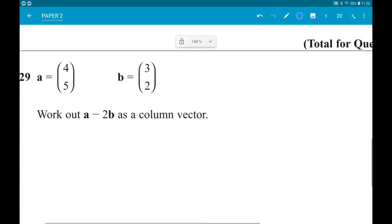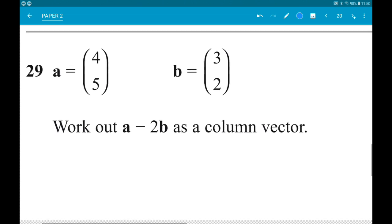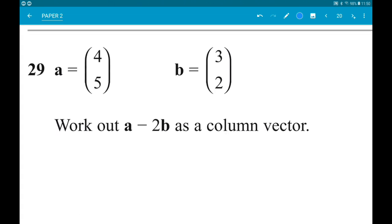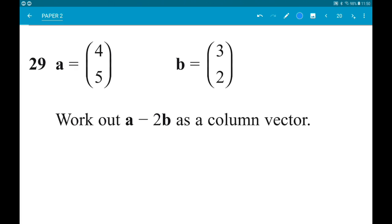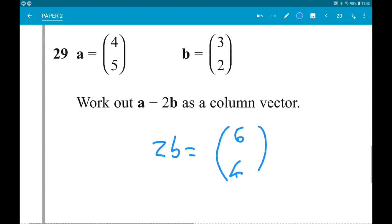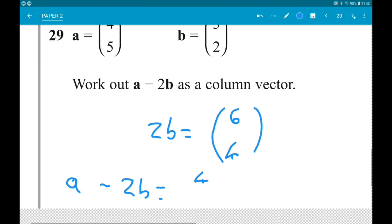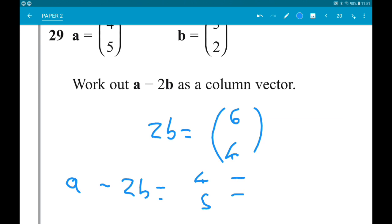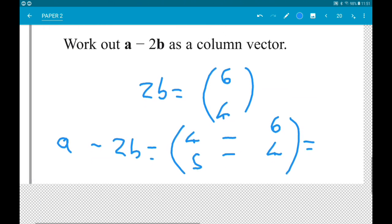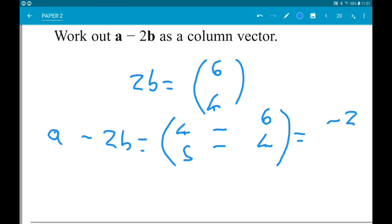Final question: We have column vectors. Vector A is 4, 5. Vector B is 3, 2. Work out A minus 2B. 2B is just 6, 4. When you subtract vectors, you just work across. A minus 2B is 4, 5 minus 6, 4. That's going to give us minus 2 and 1.